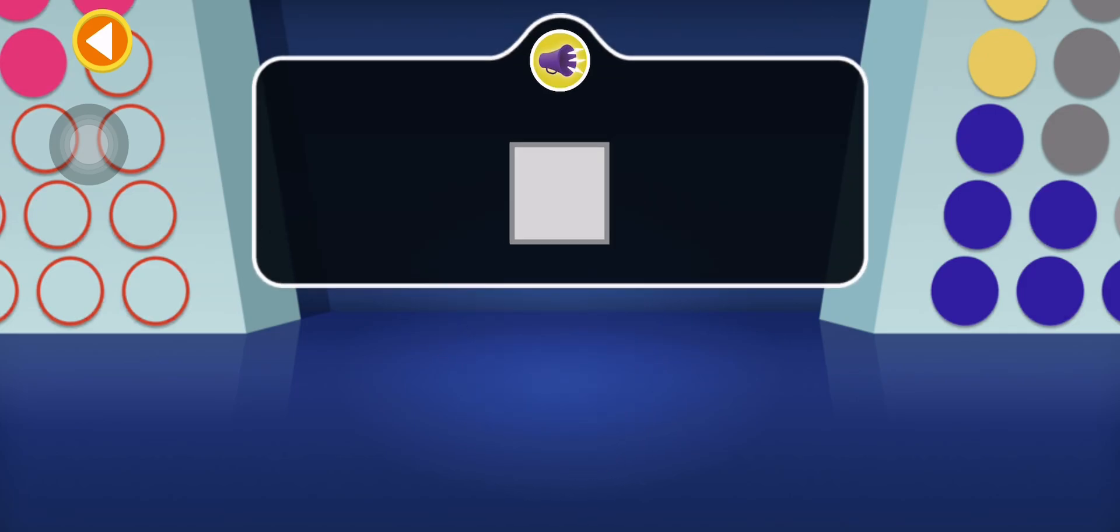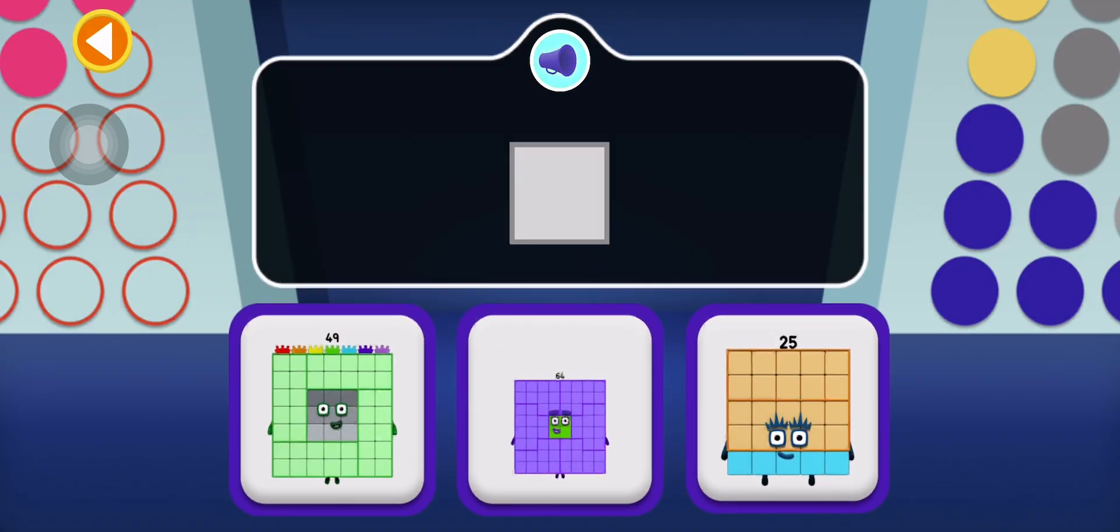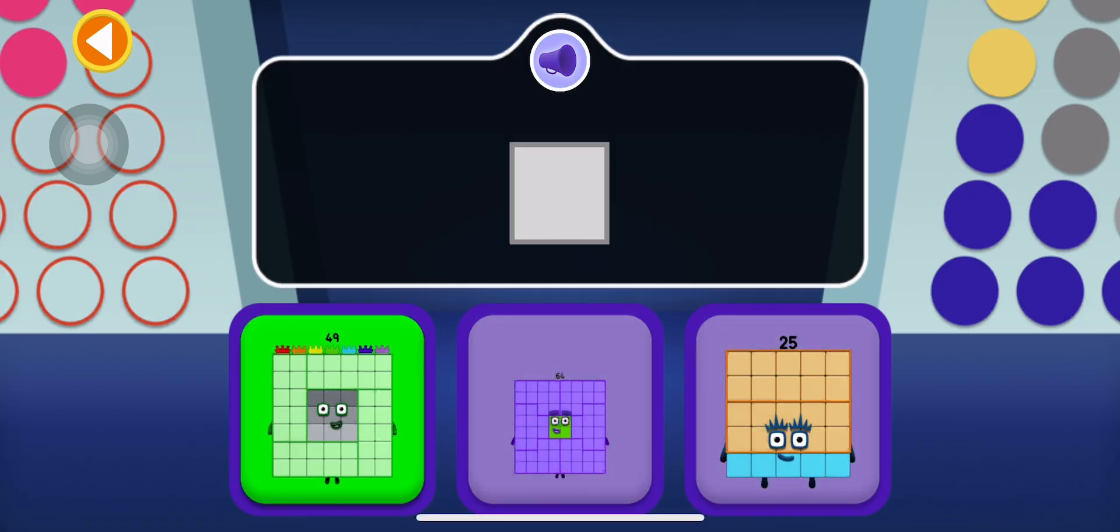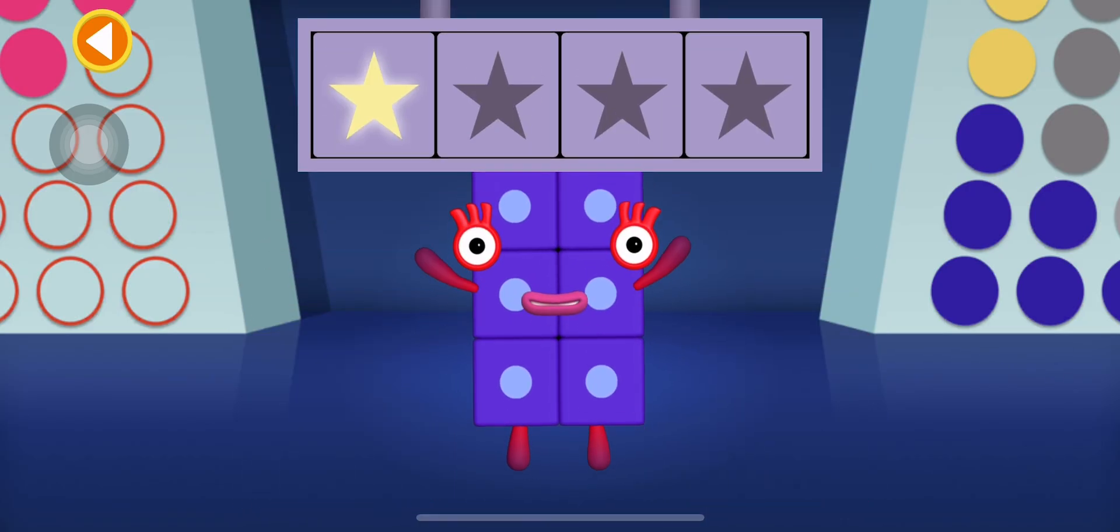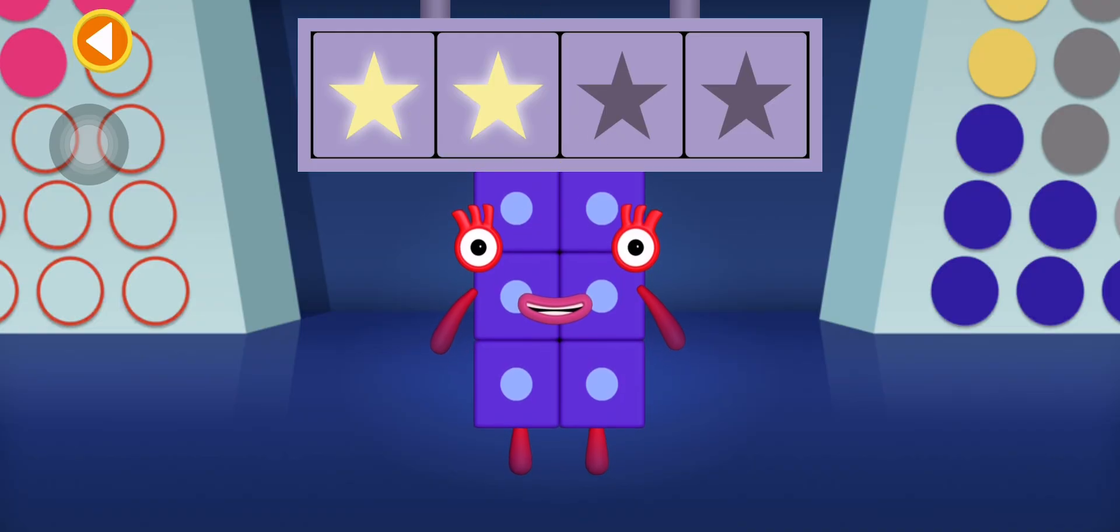49 is a square number because it's 7 wide and 7 tall. Can you find it? Woohoo! You won two super shiny stars!